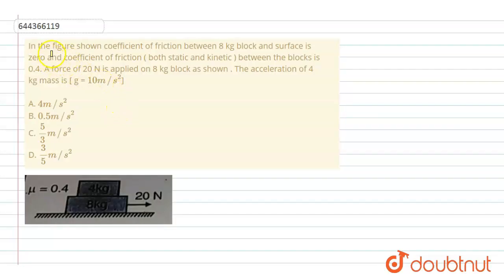Hello student, let's solve this question. The question says that in the figure shown, the coefficient of friction between the 8 kg block and surface is 0, and the coefficient of friction, both static and kinetic, between the blocks is 0.4. The coefficient of friction between both blocks is 0.4.